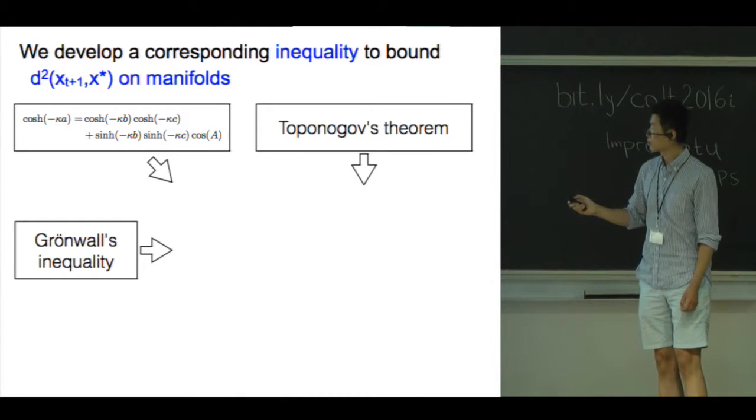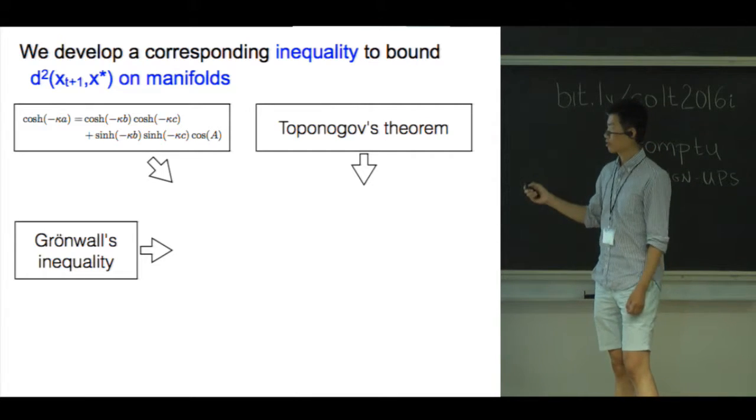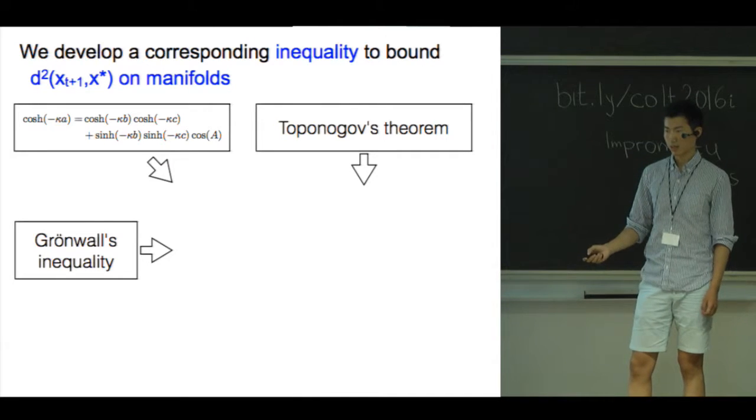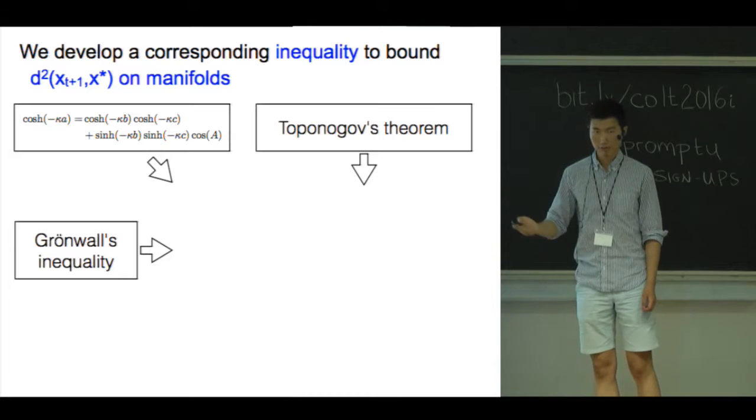In addition, we use Toponogov's theorem, which is a comparison theorem from metric geometry, and Grönwall's inequality, which is a comparison theorem from differential equations.